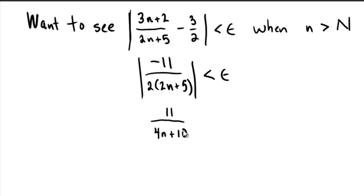And that's the amount that I wish I could make less than epsilon. But if you notice, by making a denominator smaller, you make the fraction larger. So 11 over 4n plus 10 is certainly less than 11 over 4n. So in other words,